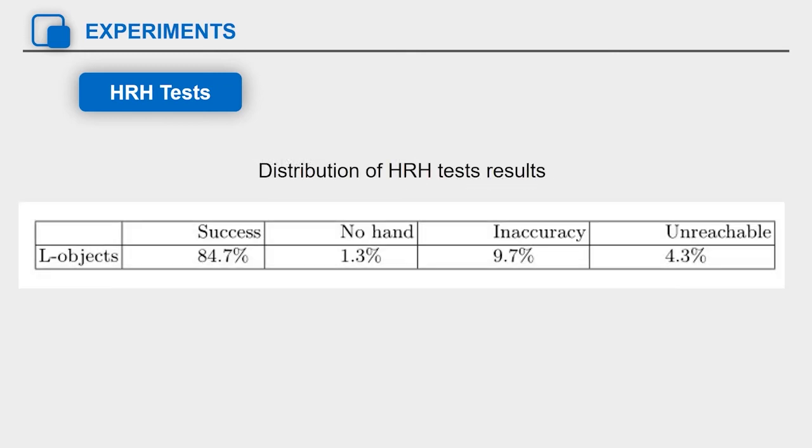The table shows the distribution of human robot handover test results. We can see the overall success rate of the human robot handover test was 84.7%, which proves that our method can be effectively applied to robots to achieve human robot handover tasks.